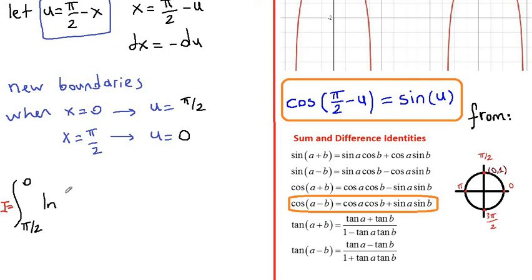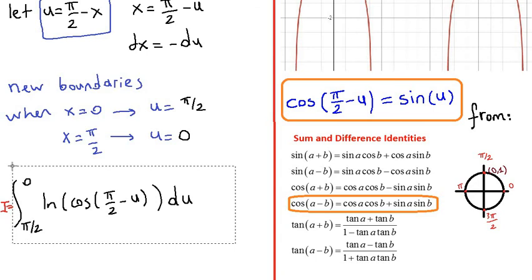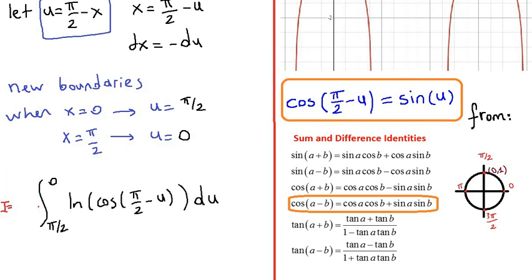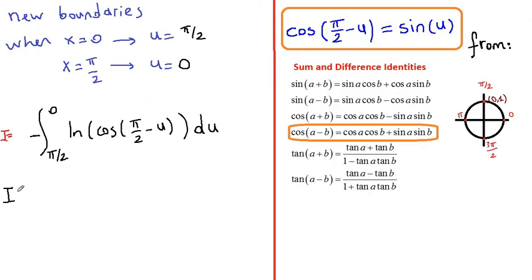And we said that this integral is i. So we have ln of cosine of x, and we said that x is pi over 2 minus u. And instead of dx, we are going to write negative du. We can write du here and pull the negative sign in front.